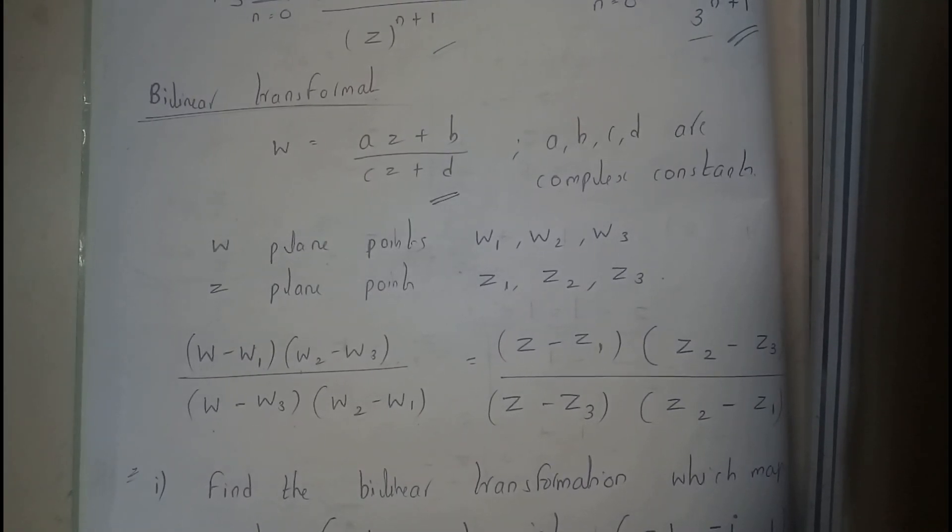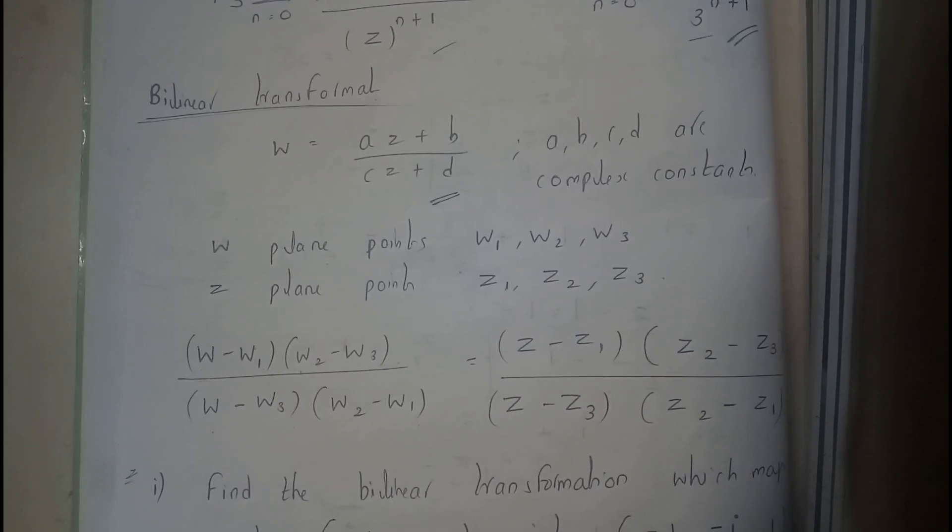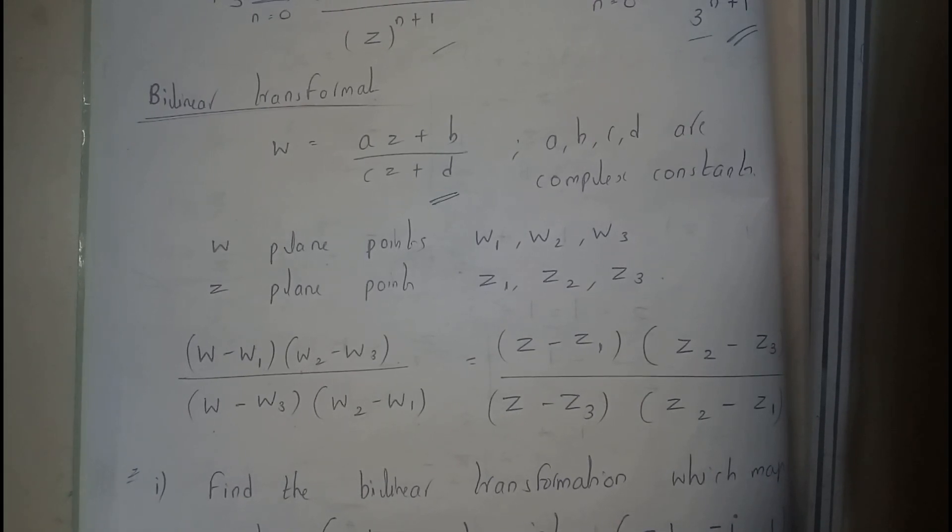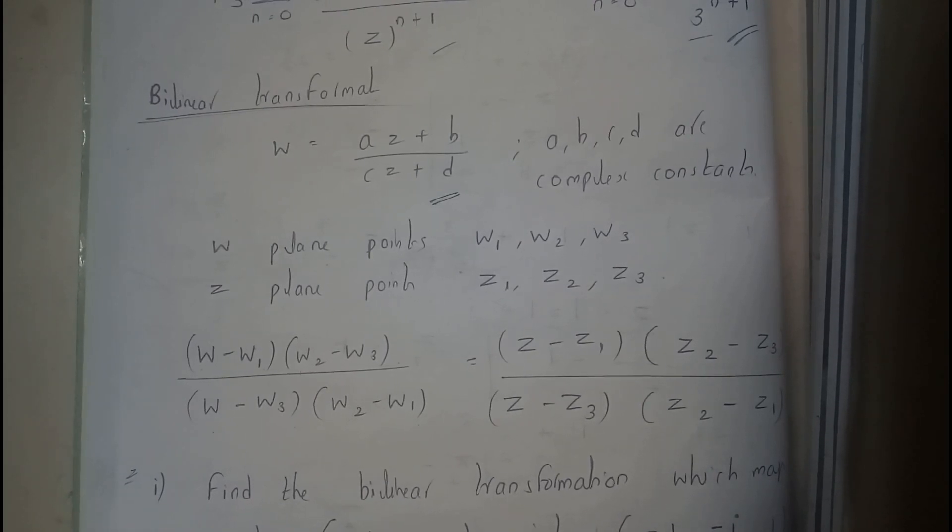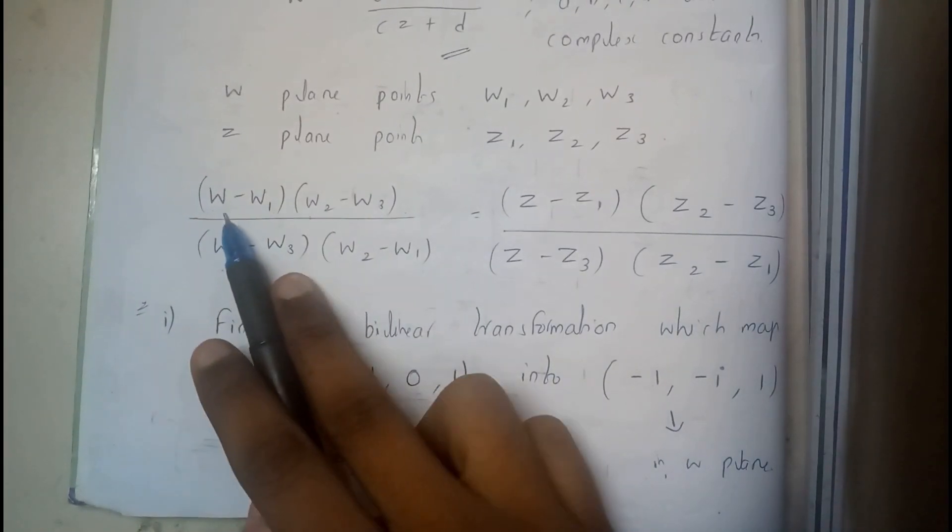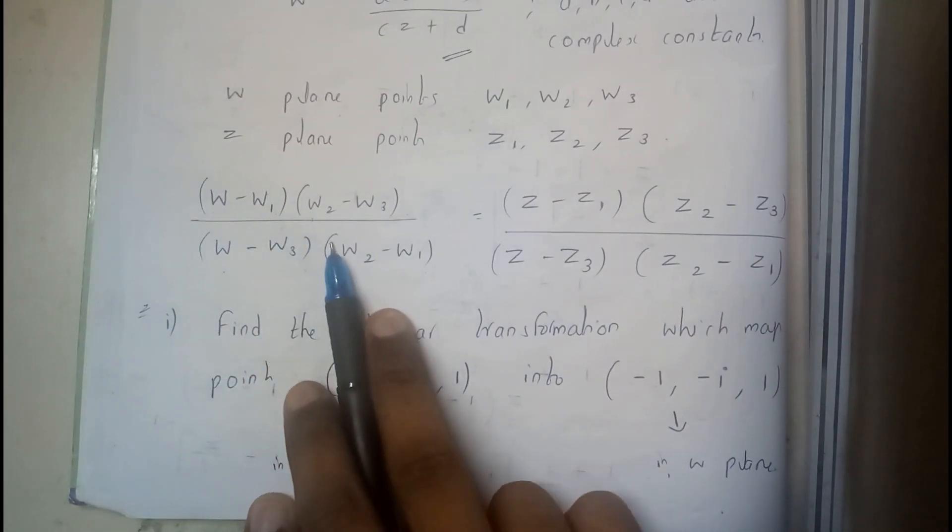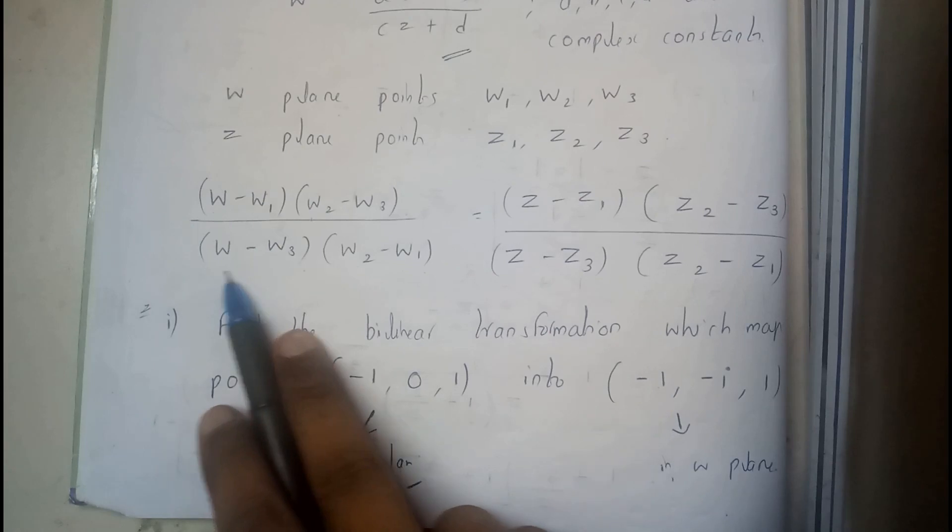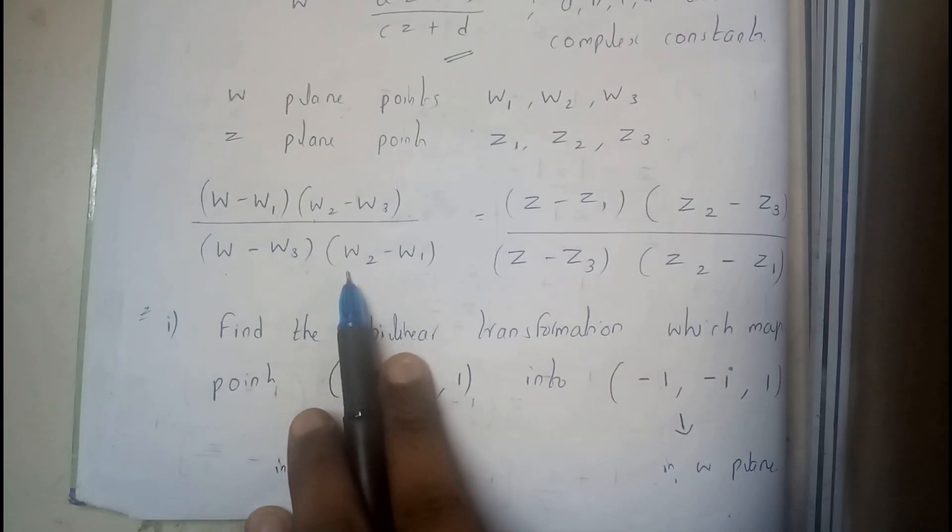This question carries only two marks. It's a two mark question, so it's really easy. Now let's learn all about bilinear transformation. Basically there is a small formula for this. This is the main formula: (w - w1)(w2 - w3) / (w - w3)(w2 - w1)